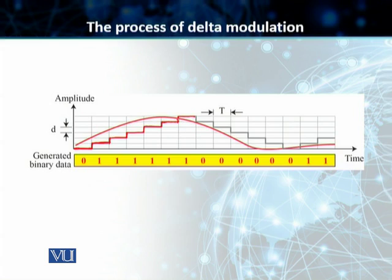Now, from this bit onwards, the analog signal's amplitude is actually reducing. So we come down, and our next bit is a zero. The amplitude is still decreasing — next bit is a zero. Still decreasing — a zero. Still decreasing — a zero. Constant — a zero. And it slowly starts rising up, so we have a zero here, and then goes up again. It's still increasing — goes up again.